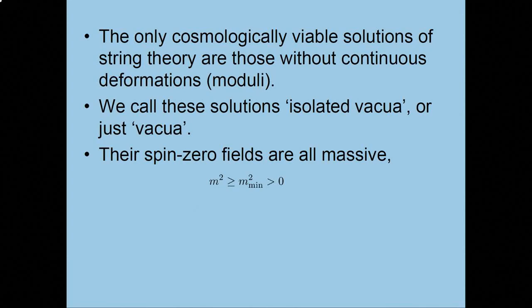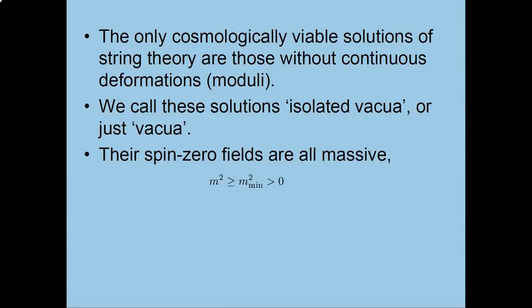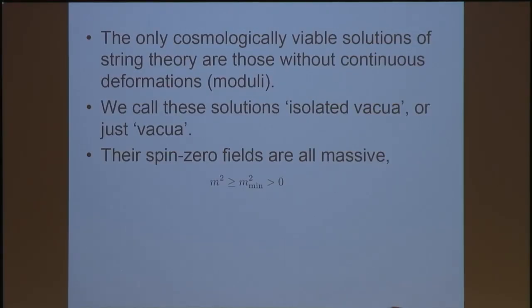So, this is what I meant by realistic solutions. We're not going to actually build the standard model or anything. By realistic, I just mean, not ruled out by the preceding considerations. So, a realistic solution for today just means, a solution without continuous deformations, without moduli. And these solutions we call isolated vacua. But since we always mean the same thing, we usually just call them vacua. So, if I say I found a vacuum of string theory, in this context what I mean is I found a solution of the equations of motion, Ricci flat six manifold, where the resulting spin zero fields all have masses bigger than some minimum value. That's positive.